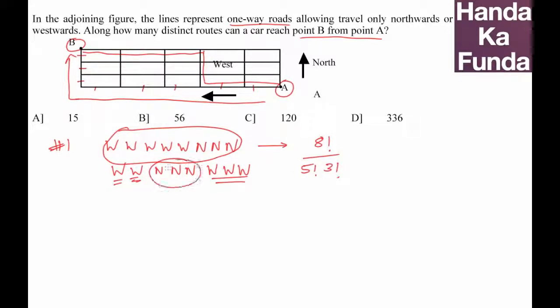And how much is this? This will be 8 × 7 × 6 × 5! divided by 5! × 3!. Now 5 factorial cancels, 3 factorial and 6 cancel. I am left with 8 × 7 or 56, which is given to me as option B.